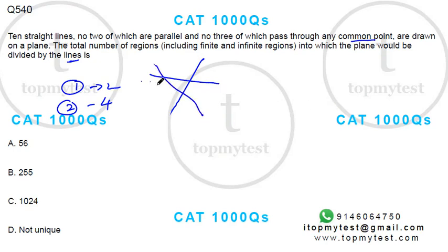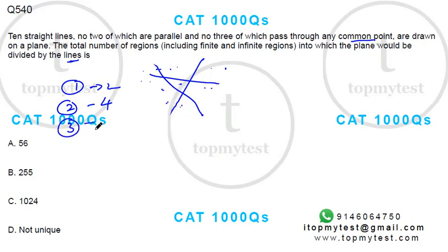Counting the regions: one, two, three, four, five, six, seven — so with three lines you will have seven regions.